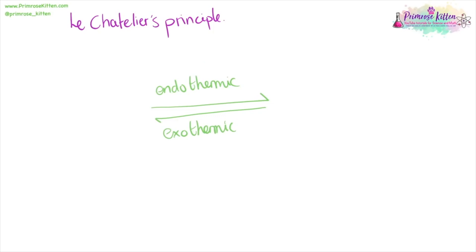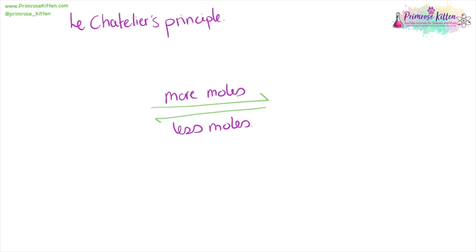Le Chatelier's principle tells us that whatever you do to a reversible reaction, the reaction will do the opposite. If one direction is endothermic and the other exothermic: heating the reaction will increase the endothermic reaction to compensate, and decrease the exothermic reaction. Decreasing the temperature does the opposite. If you increase the pressure or concentration, the reaction shifts to the side with fewer moles to compensate. If you decrease, it shifts to the side with more moles to compensate.